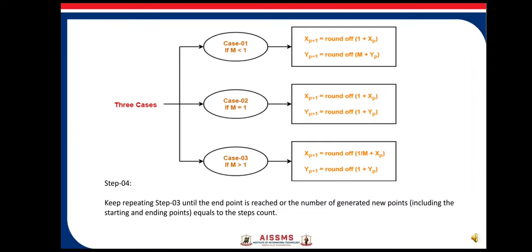Case 2: If m equals 1, then the next x coordinate is round of (1 plus xp) and yp+1 equals round of (1 plus yp). Case 3: If m is greater than 1, then xp+1 equals round of (1/m plus xp) - that's the inverse of slope - and yp+1 equals round of (1 plus yp).